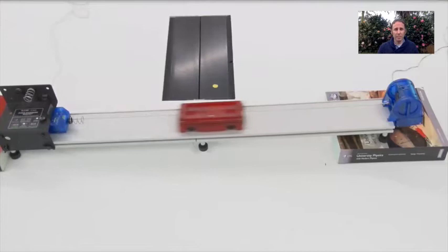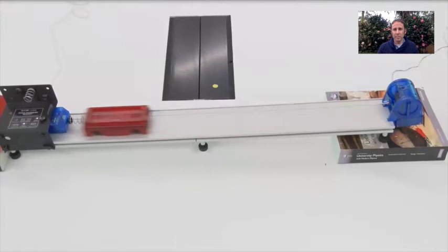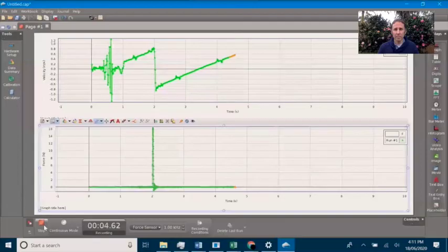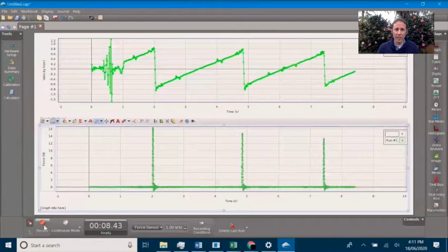All right here goes. We'll release the cart. Here's the data coming in. On the top you can see the velocity as measured by the radar gun and on the bottom you can see the force as measured by the force sensor.